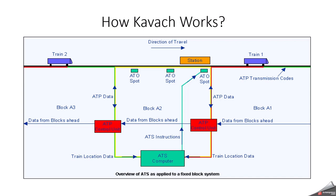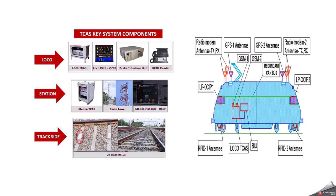The system can alert the loco pilot and take control of the brakes, bringing train movement to a halt automatically when it detects another train on the same line within a prescribed distance. This device continuously monitors train movement and sends signals ahead to locomotives, which is helpful during adverse weather conditions such as fog. Kawach incorporates key characteristics of the European Train Control System and the Indian Anti-Collision Device.